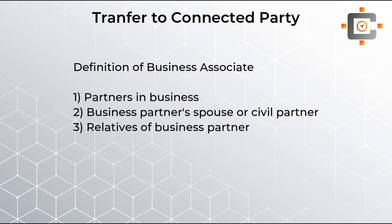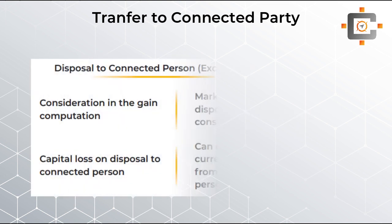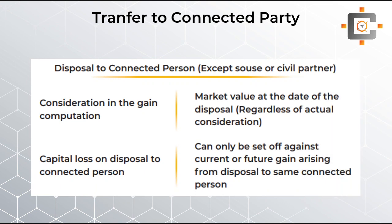We already know what happens when transacting with a connected person — the disposal proceeds will be written as market value. So the disposal proceed will be the market value less cost, but the cost will be the actual one, giving you the gain amount.